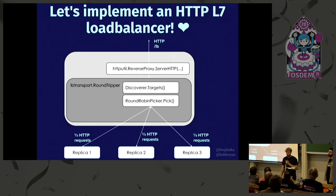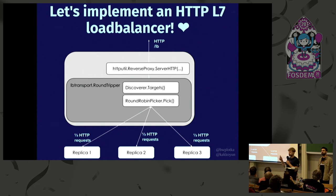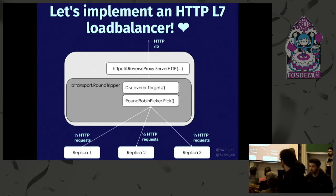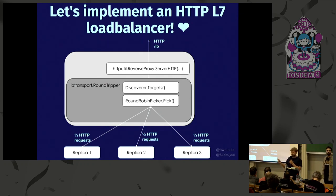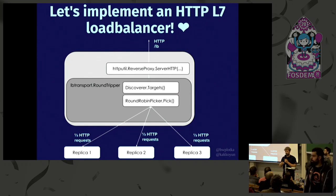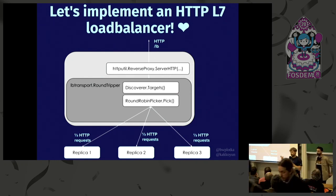From a high-level view, we have a couple of components in Go. First, a single HTTP server that implements the ServeHTTP method via a reverse proxy structure available in the HTTP util standard library. This reverse proxy allows us to inject a custom transport — a RoundTripper. We implemented our own transport called LBTransport, which has a discoverer that gives us targets to proxy to, and a round-robin picker that picks targets fairly: replica one, two, three, one, two, three. The load balancer then forwards the request to the given replica and proxies the response back to the user.